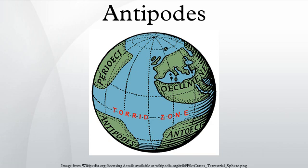Medieval illustrations imagine them in some way inverted, with their feet growing out of their heads, pointing upward. In this sense, Antipodes first entered English in 1398 in a translation of the 13th-century De Proprietatibus Rerum by Bartholomaeus Anglicus, translated by John of Trevisa: 'Yonder in Ethiopia be the Antipodes, men that have their feet against our feet.'